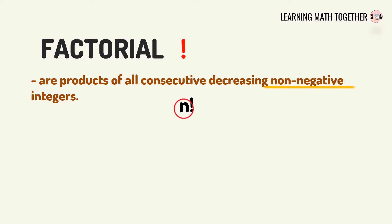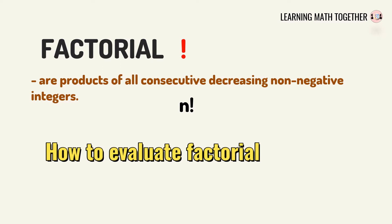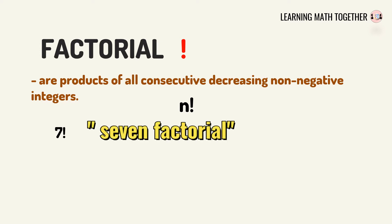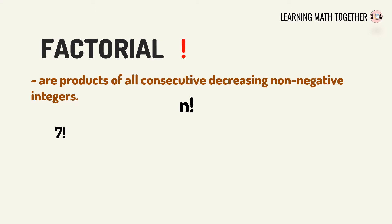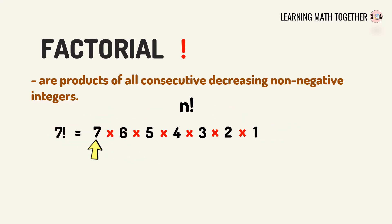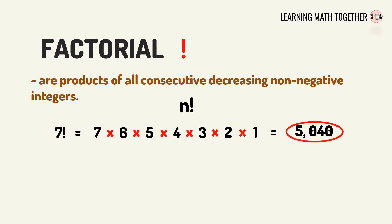Where n is any non-negative integer. To understand how to evaluate factorial notation, let's have examples. For example number one, we have 7 factorial. To simplify 7 factorial, we get all the products from 7 down to 1. That means we have 7 times 6 times 5 times 4 times 3 times 2 times 1, which is equal to 5,040. So 7 factorial equals 5,040.